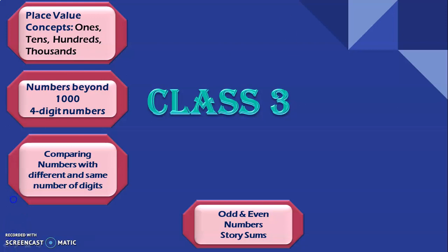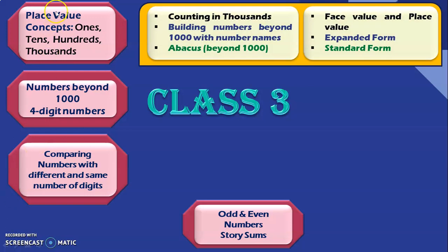Now let us see the learnings we will achieve under each of these topics. Under place-value concepts, we will see how to count in 1000's — counting from 1000, 2000, 3000, up to 10,000. Next, we will build numbers beyond 1000 with number names based on place-value concepts. We will also look at 4-digit numbers on an abacus. Then there will be more activities related to face-value and place-value concepts, which were introduced in class 2, so in class 3 we will see more details. Finally, we will learn to write a 4-digit number in expanded form and short form.